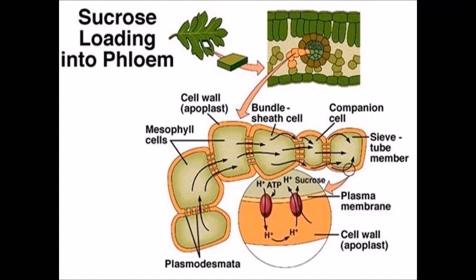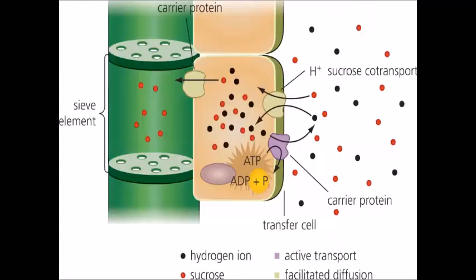This relies on a very complex process mainly using hydrogen ions and active transport to set up a concentration gradient so the sucrose can move into the companion cell and then into the phloem and then finally arrive at the sink. So you've got to break this down step by step.